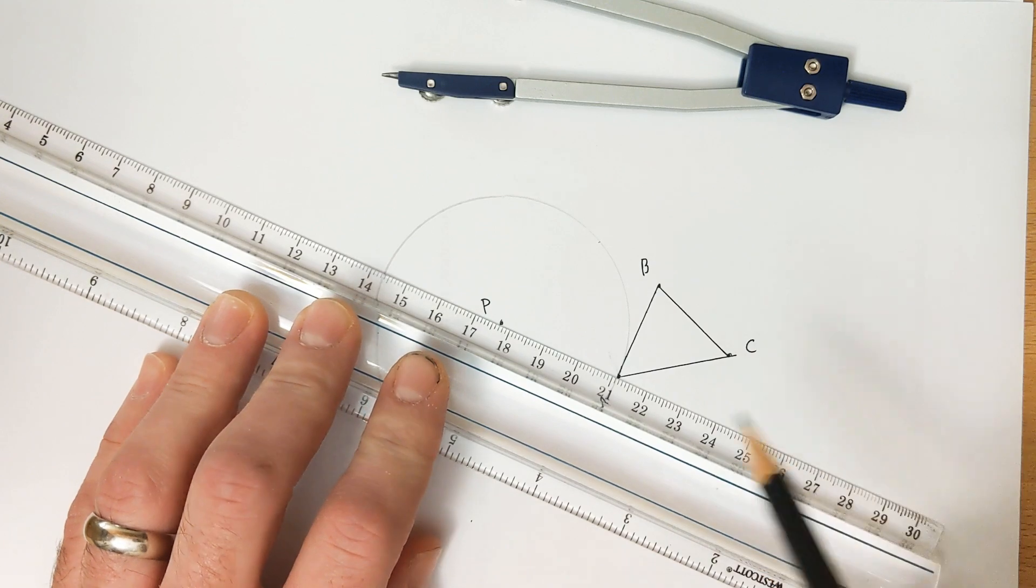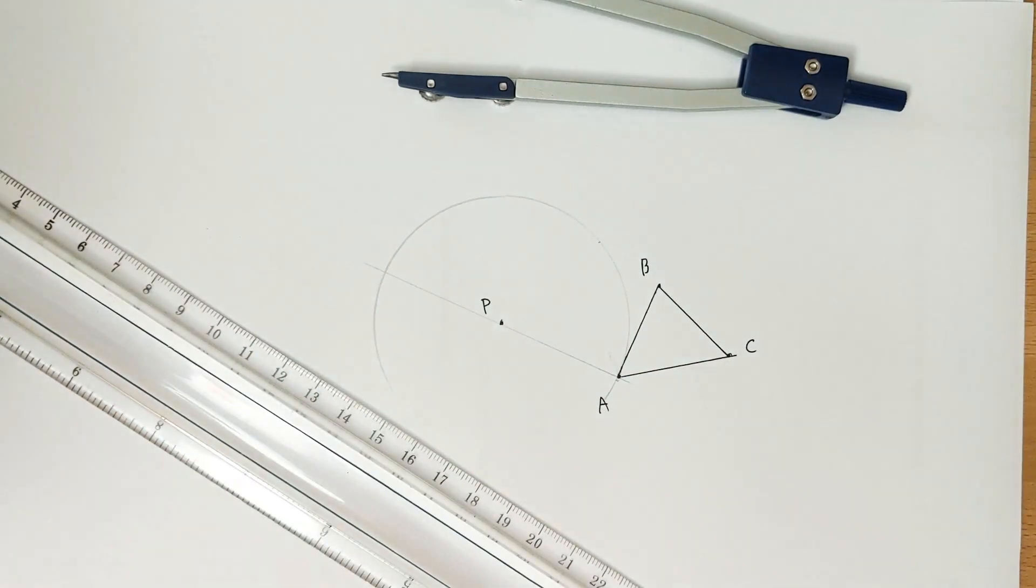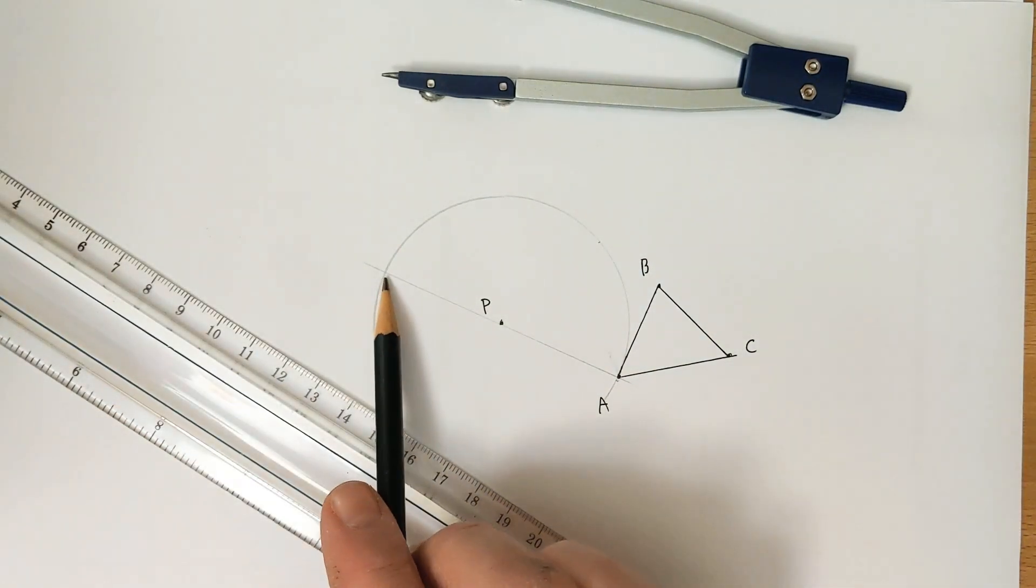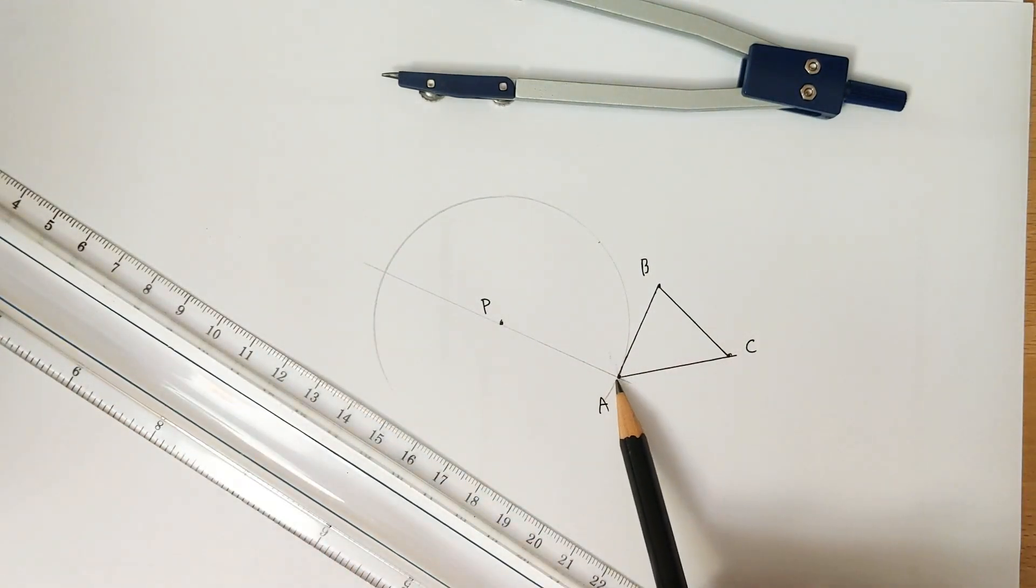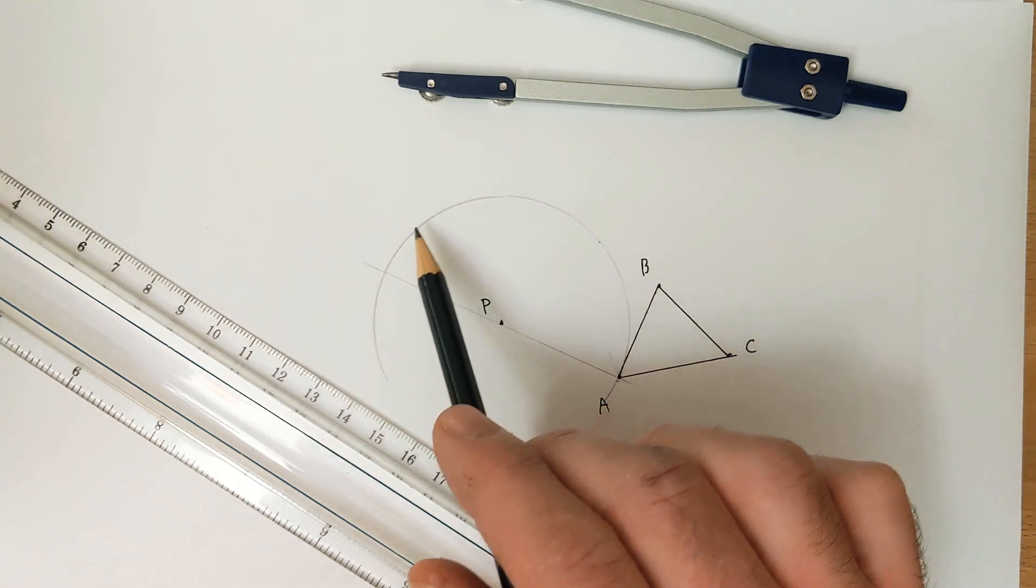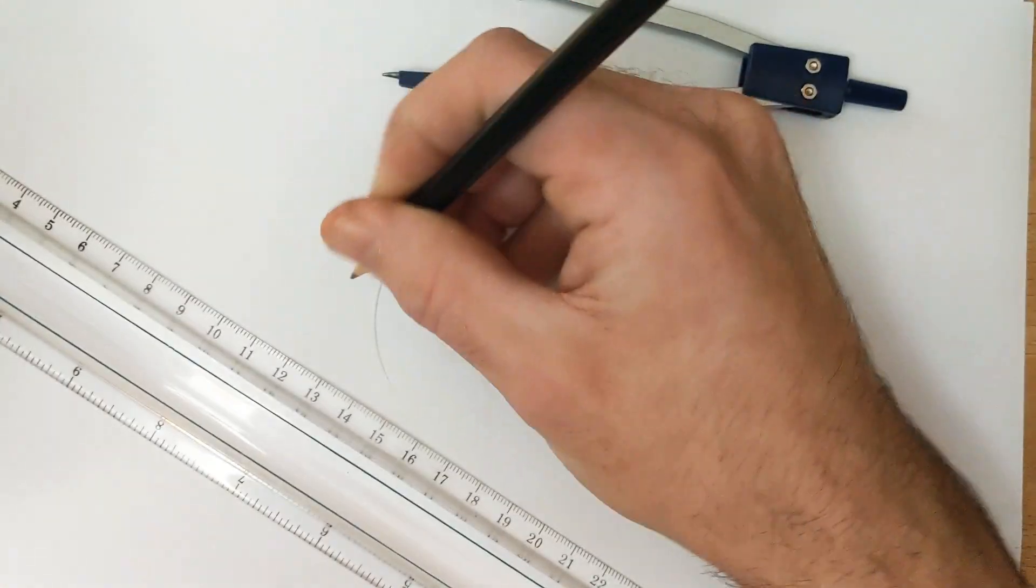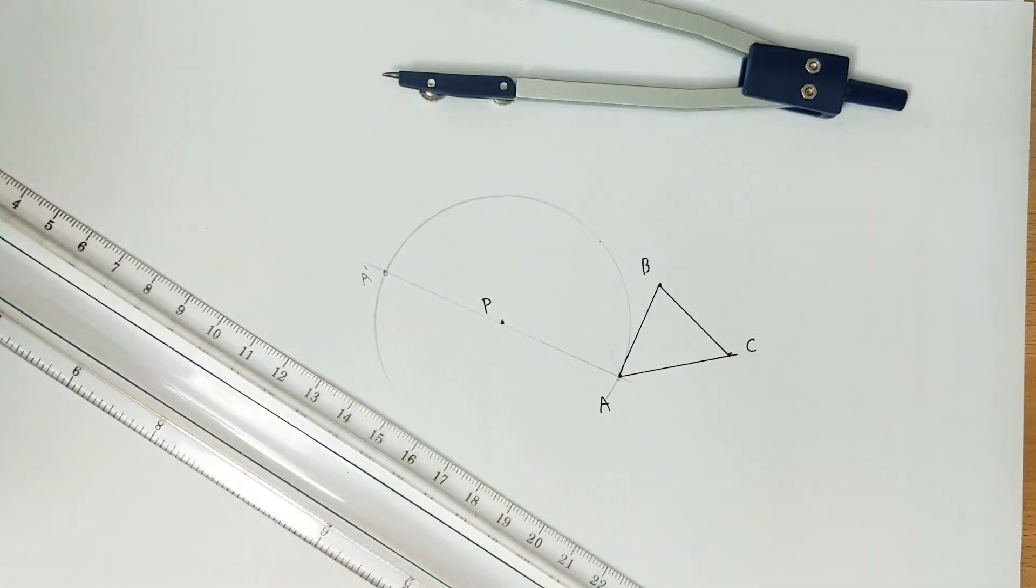We just line up our pre-image point, our center of rotation, and lightly draw a line. Where that diameter crosses the other side, you can imagine this point orbiting around the center of rotation 180 degrees until it exactly hits that point, and that's what gives us our point A prime, our first rotated point.